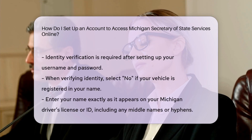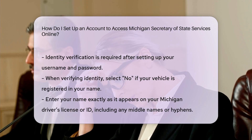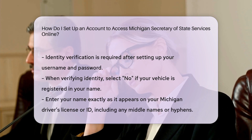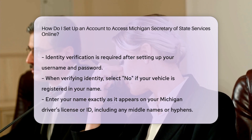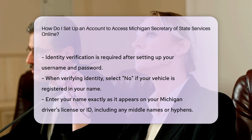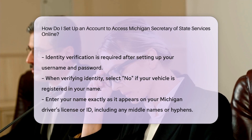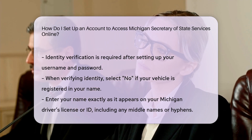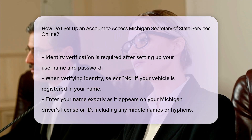Identity verification. After setting up your username and password, you will need to verify your identity. If your vehicle is registered in your name, select No for the first question. Then enter your name exactly as it appears on your Michigan driver's license or ID. This may include your middle name or hyphens in your name.